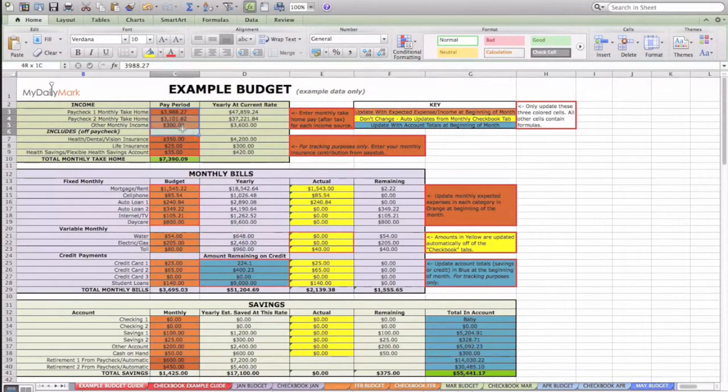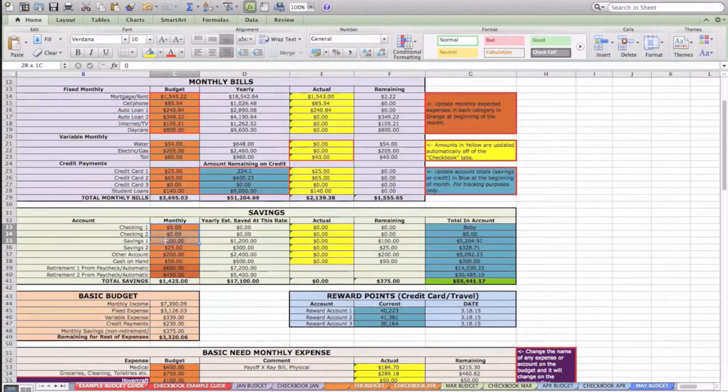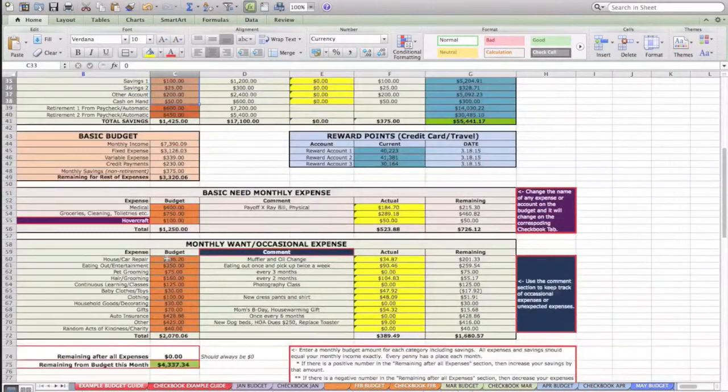The first is orange which you're going to do at the beginning of every single month. You're going to enter your potential take home pay - if you're salary this is very easy, but this is your take home after 401k and taxes, insurance, etc. You're going to enter what you expect to spend in each category as well as your savings, how much you think you're going to save and all of your basic expenses and want and need expenses. And all of this is customizable.